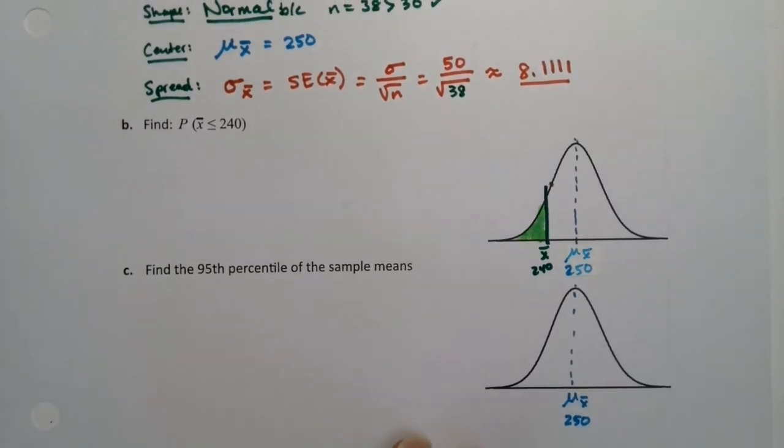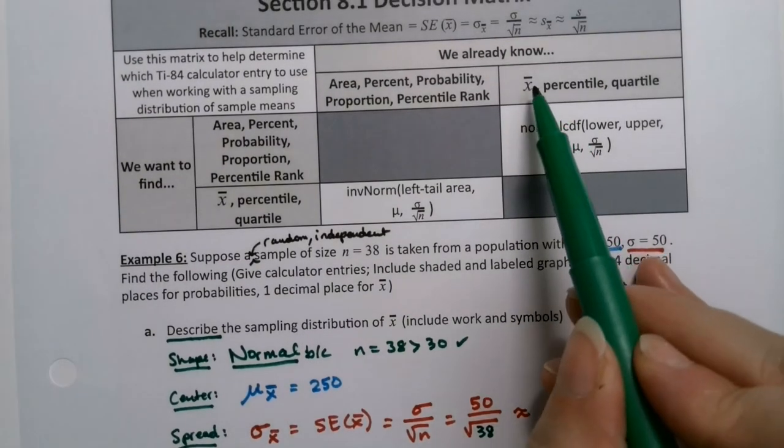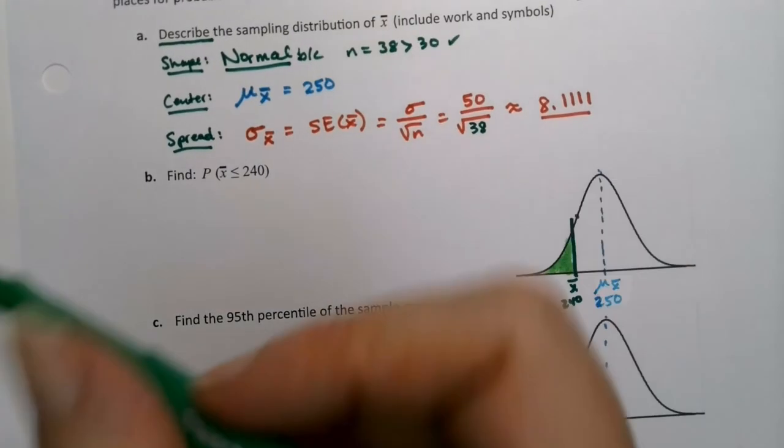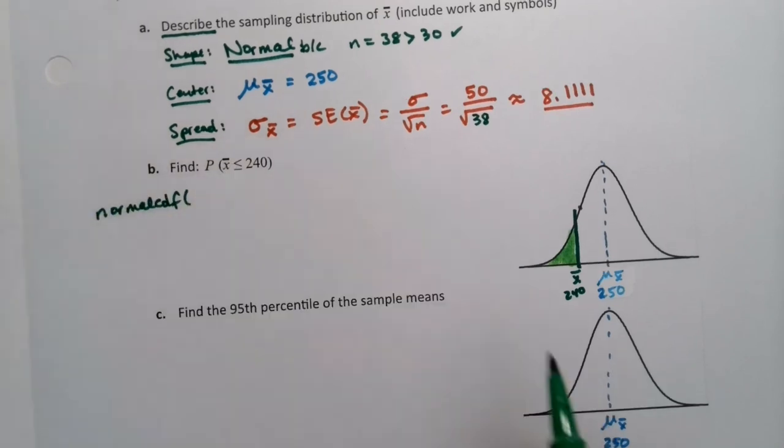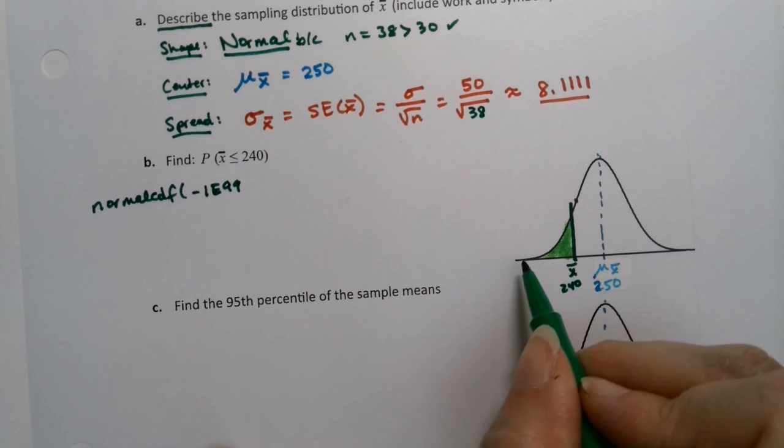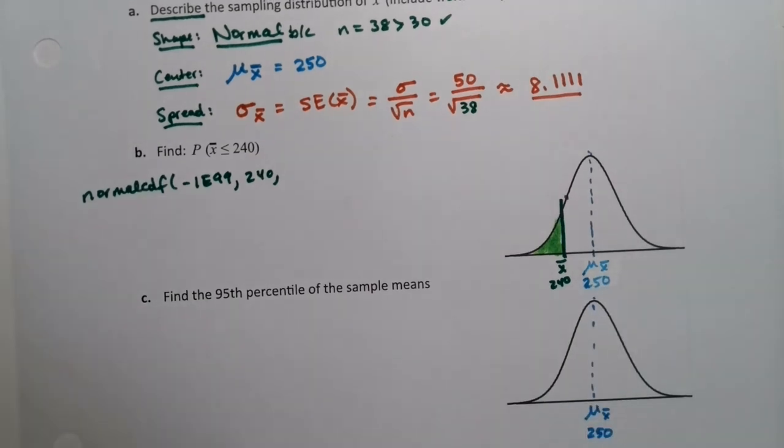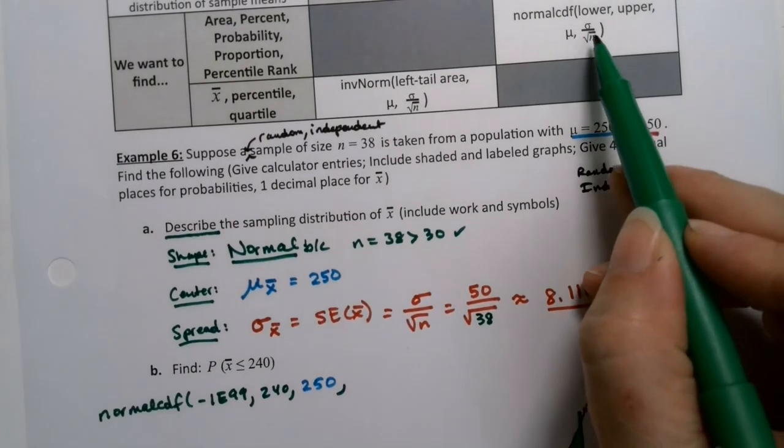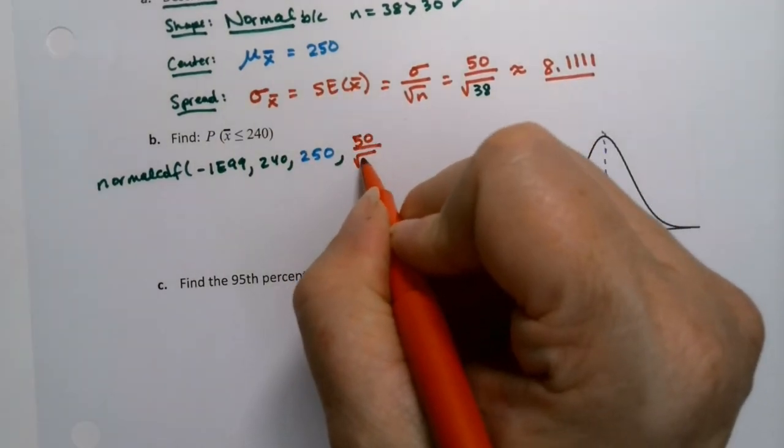If you're thinking, hey, this looks familiar, we did this in chapter seven. Yes, we did. We know the x-bar and we want to find the probability. So we're going to use normal CDF. It's normal CDF. It'd be negative 1E99, because the negative tail, that's the lower bound. Then the upper bound was 240. And then the mean was 250. And then the standard error is what you put in the back. It's got σ over the square root of n, not σ. So it's not 50. It's 50 divided by the square root of 38.